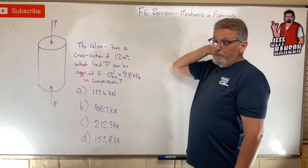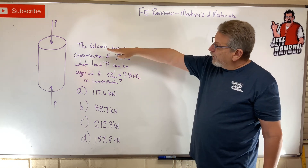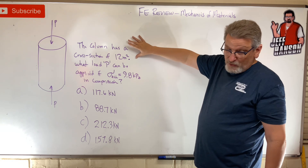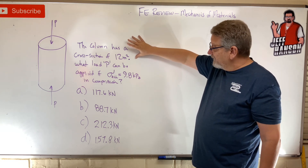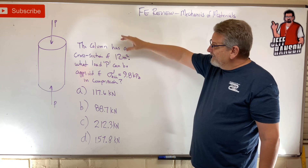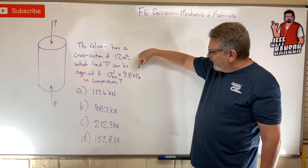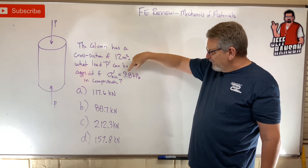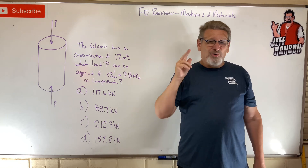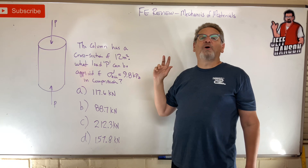Welcome back — review problem, mechanics of materials. We've got a column with a cross-section of 12 meters squared — that's a ginormous column. What load P can be applied if sigma allowable is 9.8 kilopascals in compression? There are your answer choices. One warning: watch out for units. Press pause, come back, and I'll work it out for you.